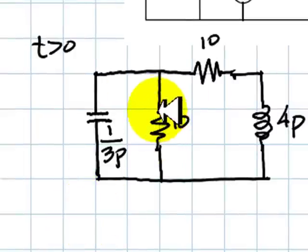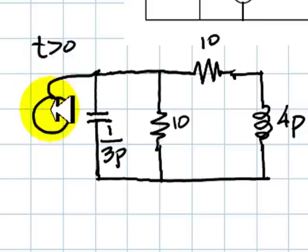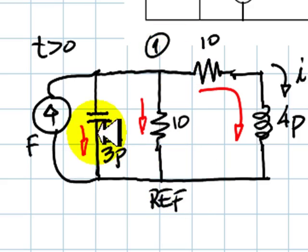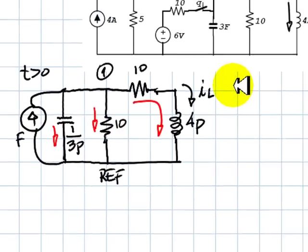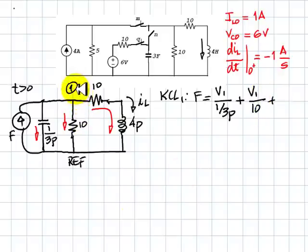Because this circuit has no sources, and according to another video in this series, we will utilize the services of a fake source. In this case, I choose to use a fake current source with a fake value f. We need to find this current. Reference node 1. KCL for node 1. Currents going in: f. Currents coming out of the node: V1 divided by 1 over 3p, plus V1 over 10, plus V1 divided by 10 plus 4p.